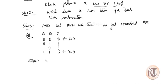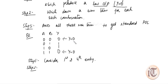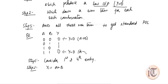In step one we consider the first and fourth entries. In step two we write down the sum term for each such combination. For a POS expression, when a variable equals zero we take the non-complemented form. So for the first entry where A=0 and B=0, the sum term Y1 equals A plus B. For the last entry where A=1 and B=1, the sum term Y2 equals A-bar plus B-bar.